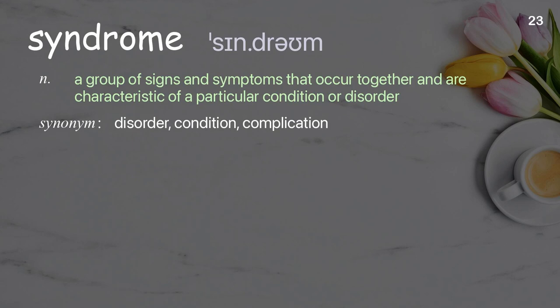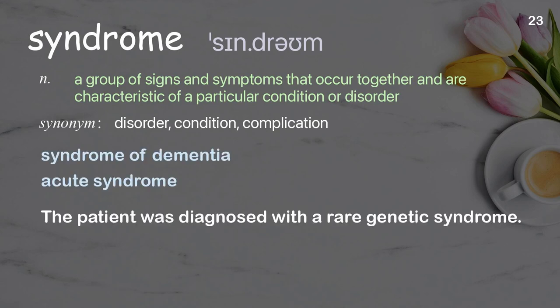Syndrome. A group of signs and symptoms that occur together and are characteristic of a particular condition or disorder. Examples: syndrome of dementia, acute syndrome. The patient was diagnosed with a rare genetic syndrome.